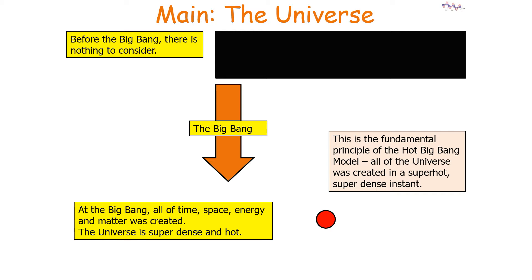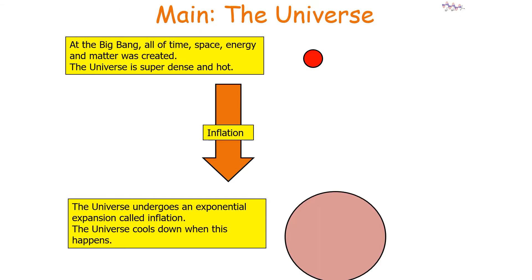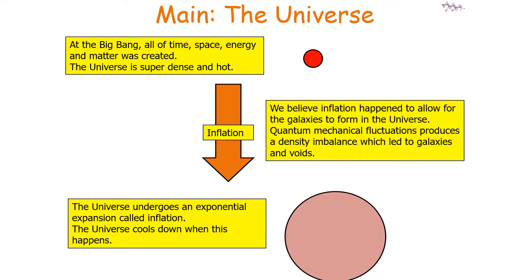All of the universe was created in a super hot, super dense instant. The universe then went through a super fast exponential expansion called inflation after 10⁻⁴³ seconds. In a fraction of a second, the universe increased in size from an atom to the size of a pineapple. The universe cools down as this happens. We believe inflation occurred to allow galaxies to form, as quantum mechanical fluctuations produce a density imbalance which leads to galaxies and voids forming.